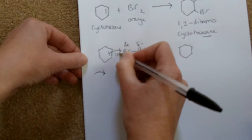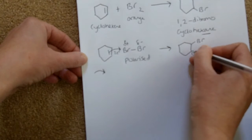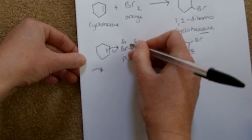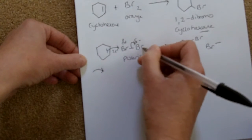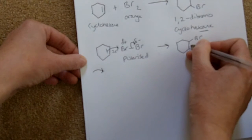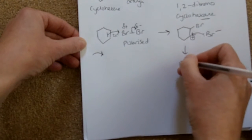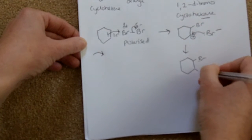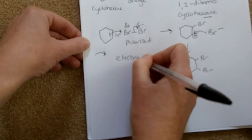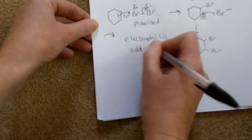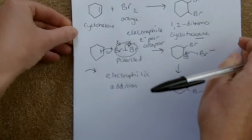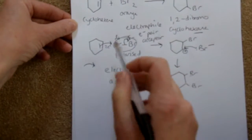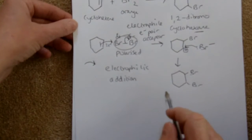The two pi electrons form a bond with bromine. This carbon gets a positive charge. The Br–Br bond breaks and both electrons go onto the Br, making it Br⁻. That Br⁻ then attacks the positively charged carbon, giving the product 1,2-dibromocyclohexane. This is called an electrophilic addition reaction. Bromine is an electrophile — an electron pair acceptor — and it's called addition because two things add together to give one product.